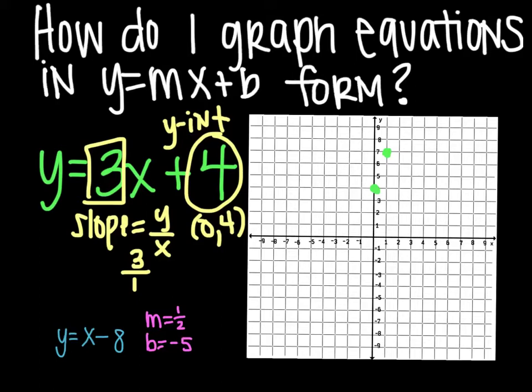Up 3 and over 1. Again, you can reverse it too and go down 3 and to the left one. But here is your graph of your line.